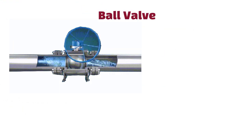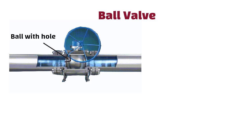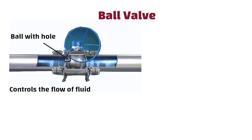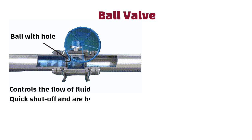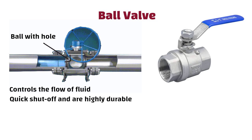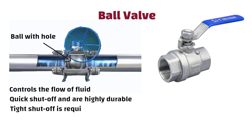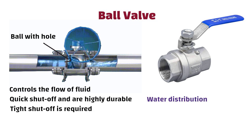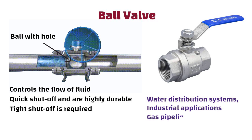Ball valves contain a ball with a hole through its center that controls the flow of fluid. They provide quick shutoff and are highly durable. These types of valves are typically used in applications where tight shutoff is required, such as in water distribution systems, industrial applications and gas pipelines.